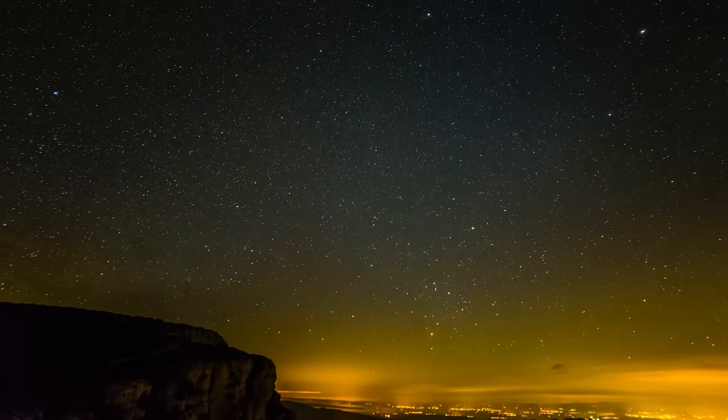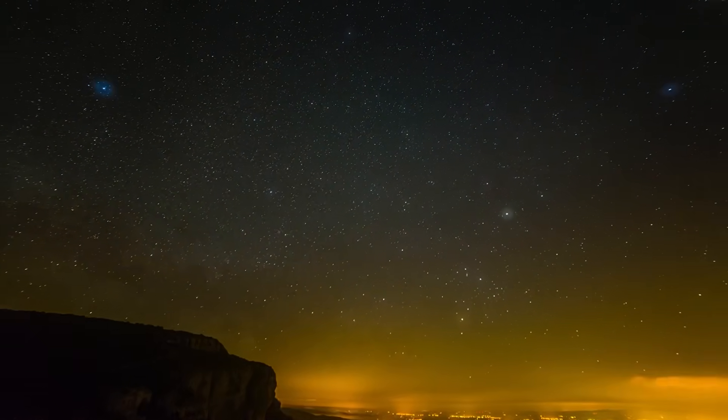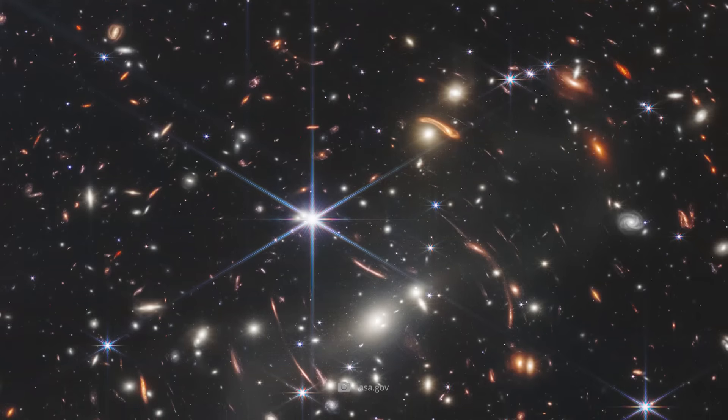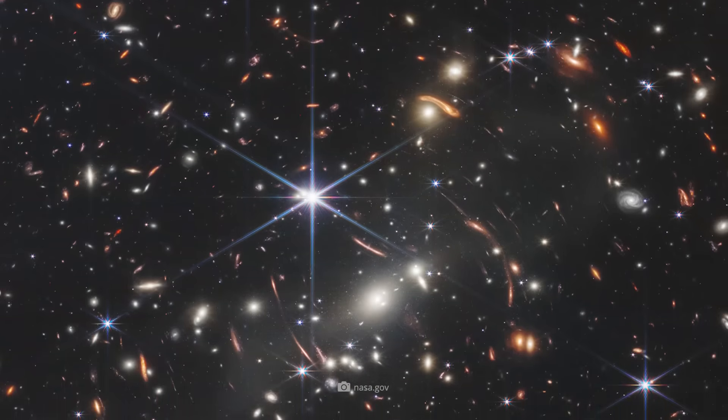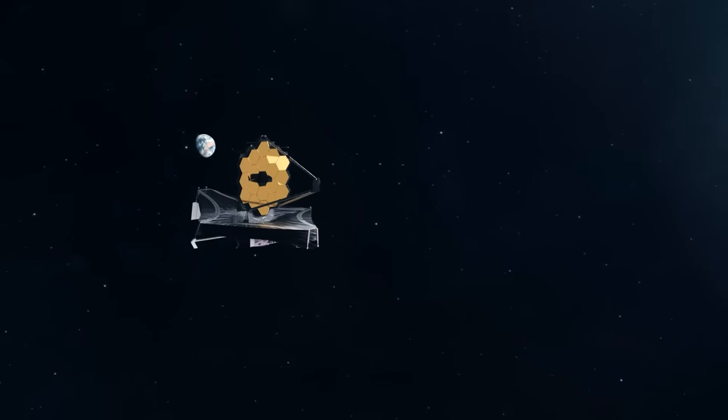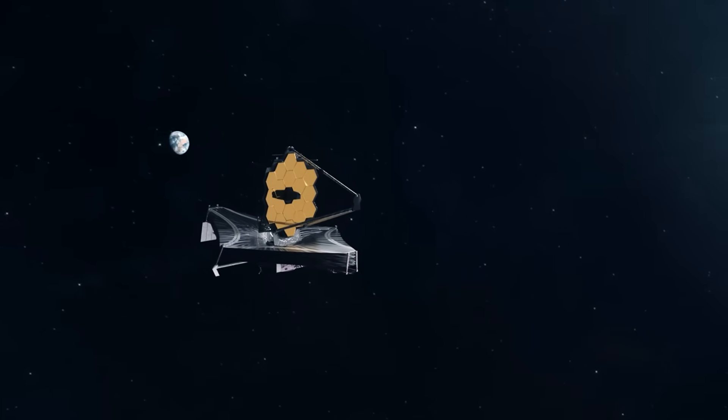This produces images that show us the cosmos as it was in the past. The first deep image from the JWST already showed thousands of very old galaxies, including many that had never been seen before.